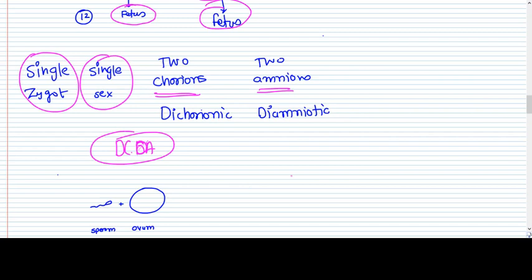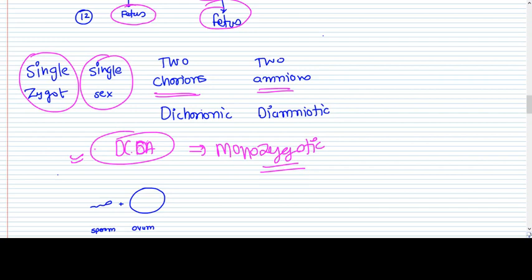But what is the difference here? The initial zygote was only one. So this pregnancy is monozygotic. When you see DC/DA, that doesn't always mean two separate zygotes were formed. In many cases, only one zygote exists, and from one zygote that divided before day four, it became two separate entities. These two separate entities have their own chorion and their own amnion — so it is dichorionic and diamniotic — but the sex is the same.